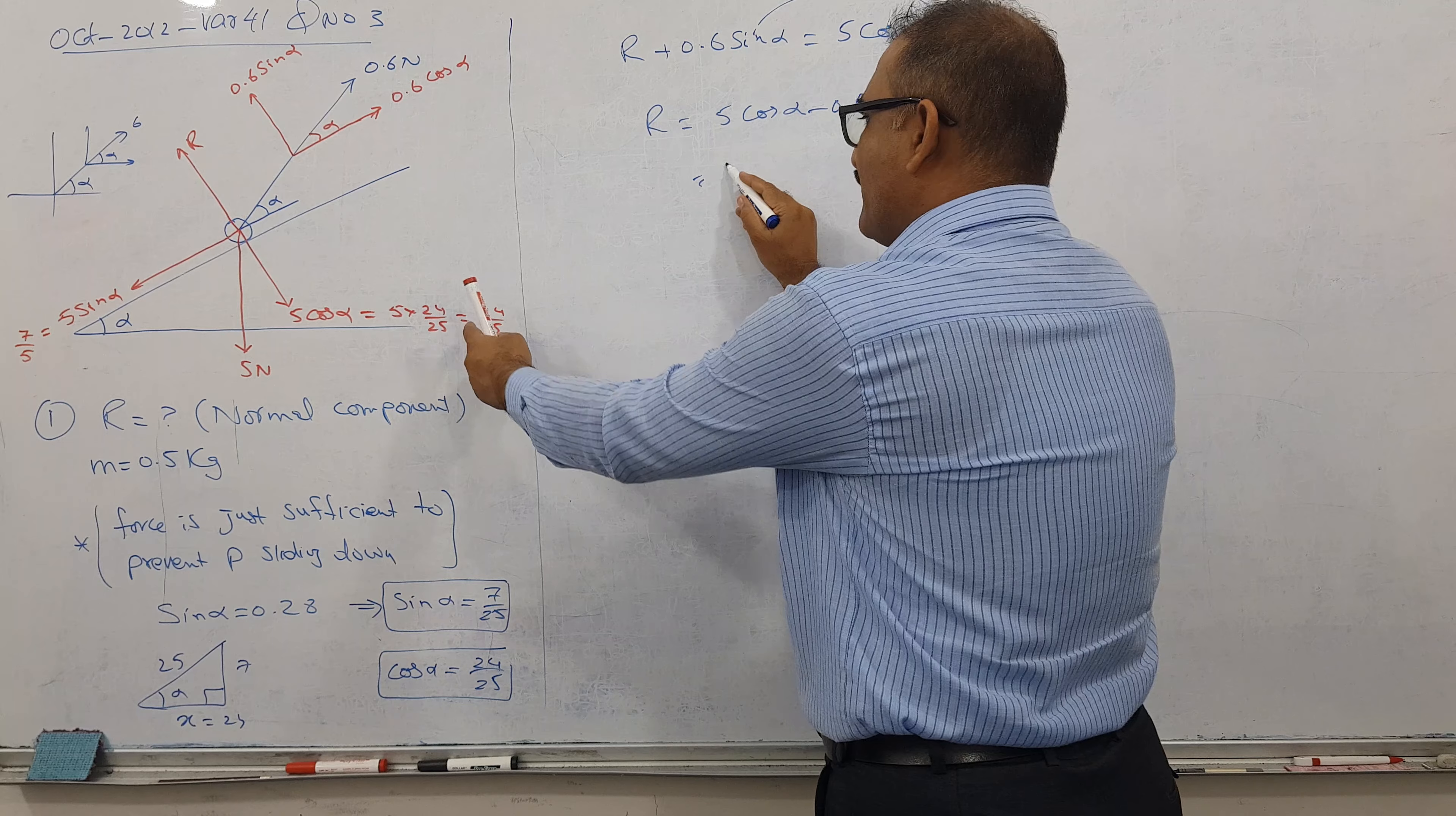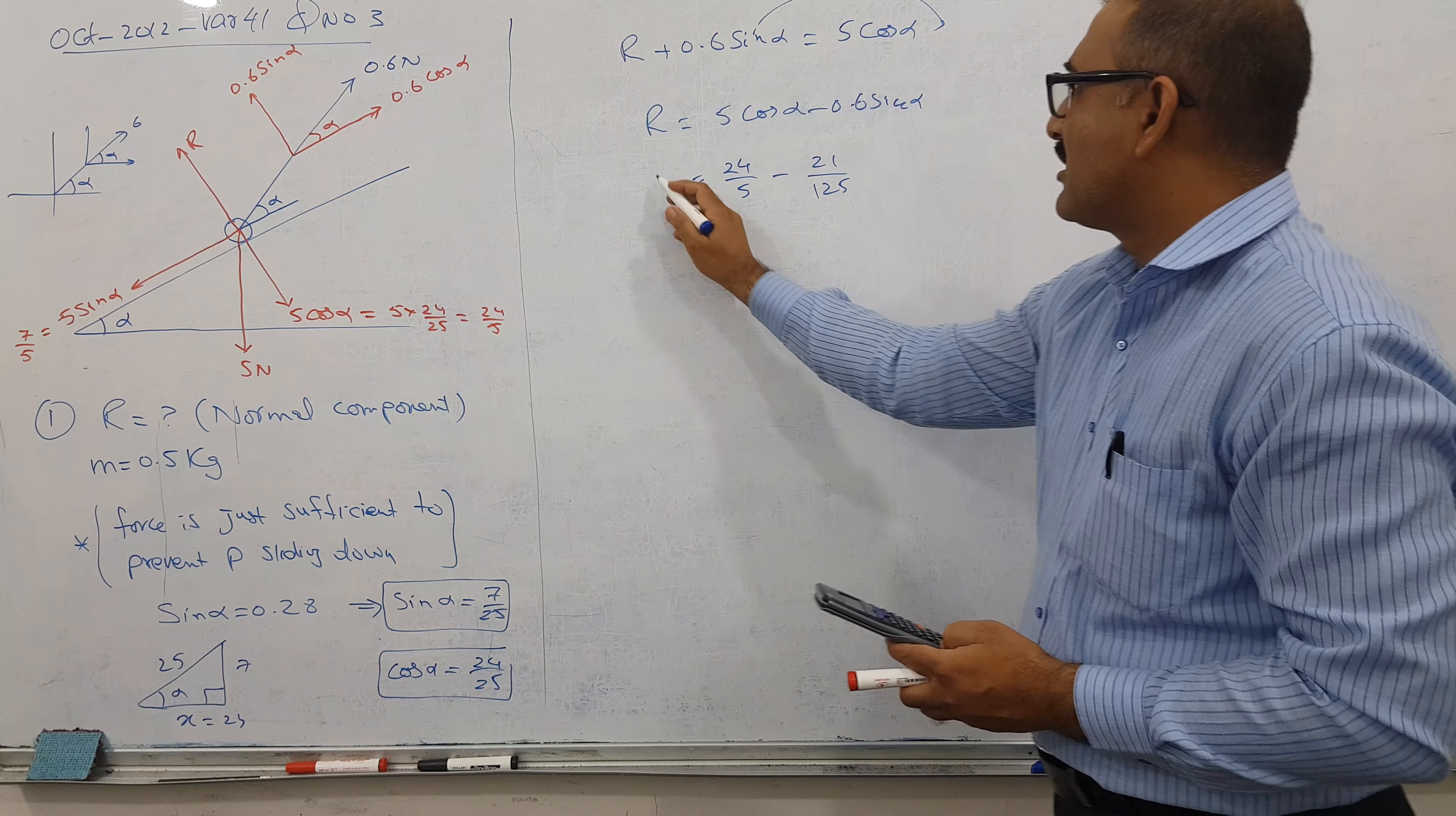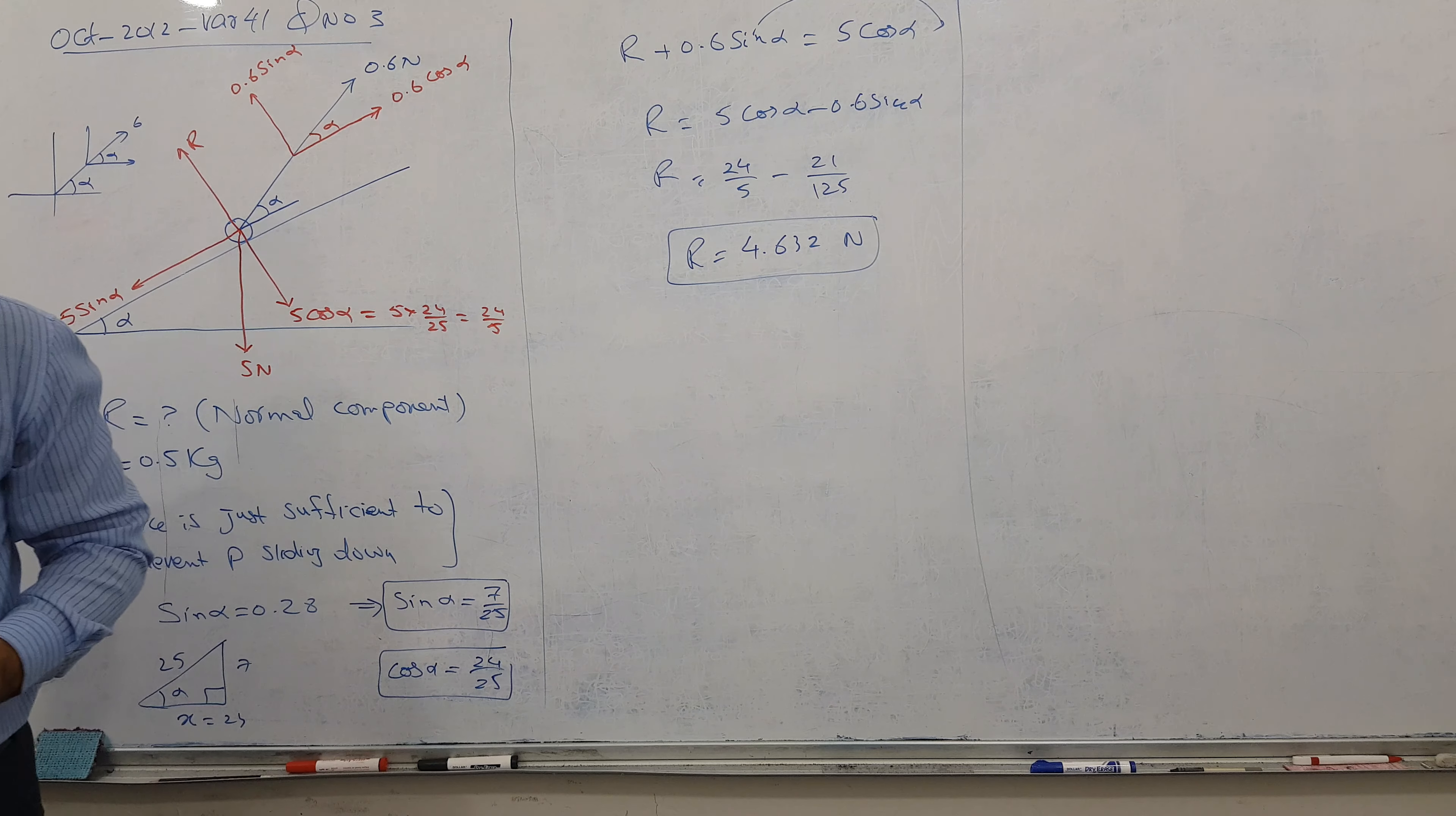Now replace our values. Cos alpha value is coming here. Ultimately I am getting 24 over 5. What about sin alpha? Here 7. What answer comes? If you check it here, 0.6 times 7 divided by 25, it gives me 21 over 125. So let's see, 24 over 5 minus, and the answer I got, R equal to 4.632 newtons. This is my first answer. Clear up till now, so this is clear.